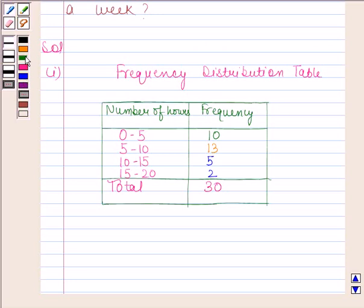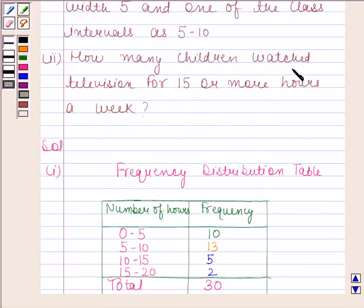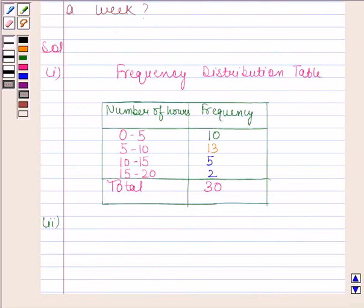Let's now do the second part. In the second part, we have to find how many children watch television for 15 or more hours a week. Now look at this table. Frequency of class interval 15 to 20 is 2. So this means only 2 students watch TV for 15 or more hours a week. Hence, our required answer is 2 children.